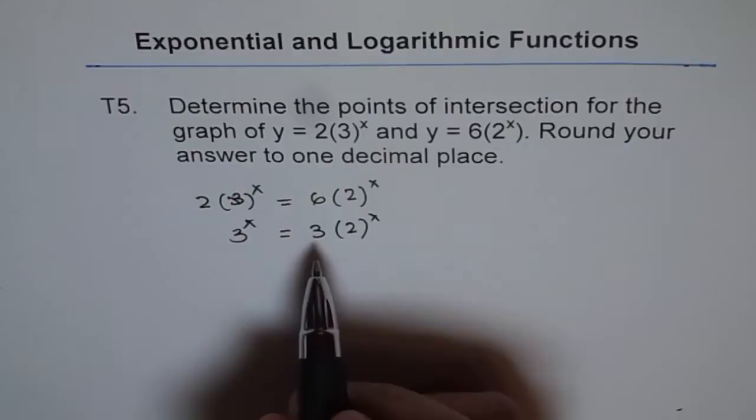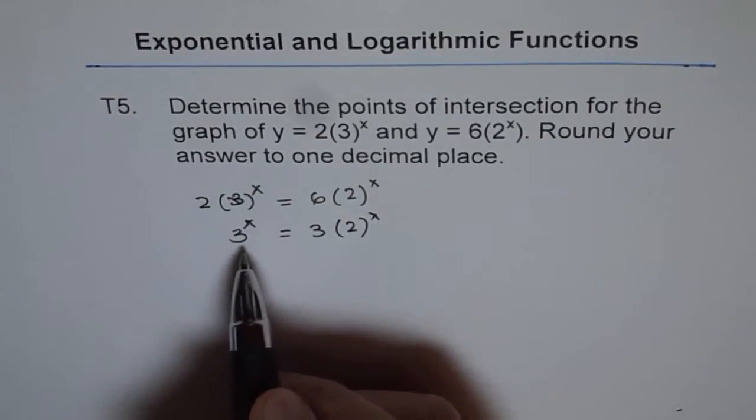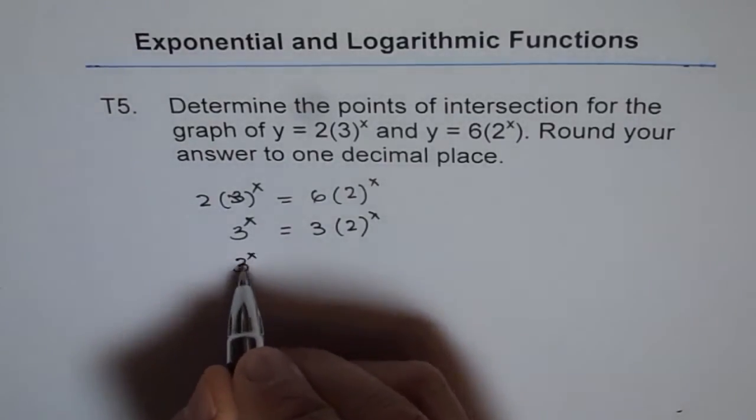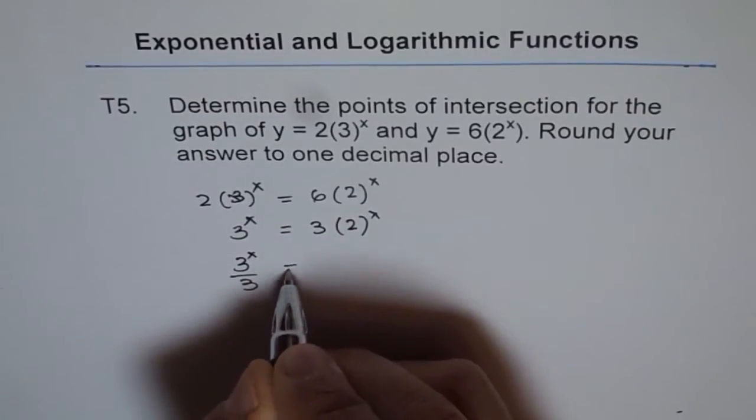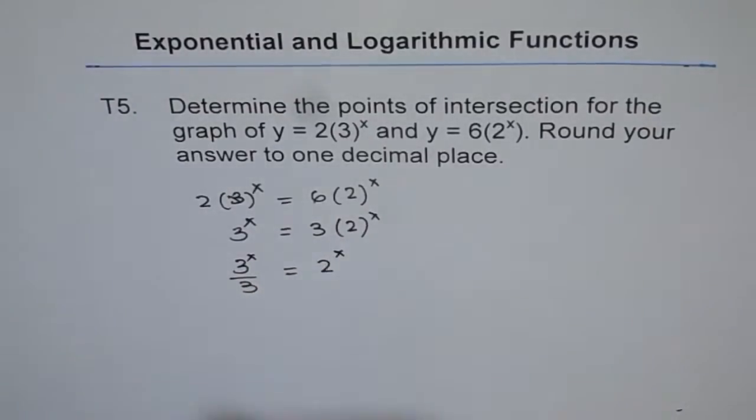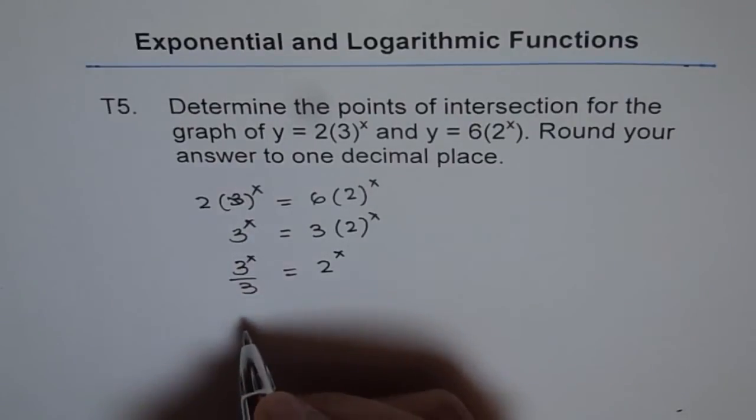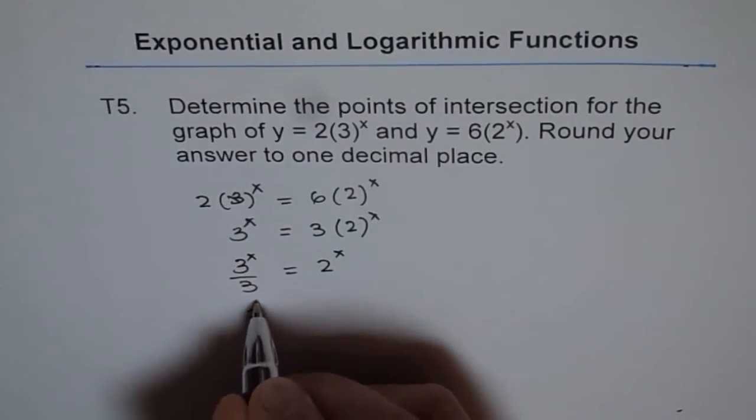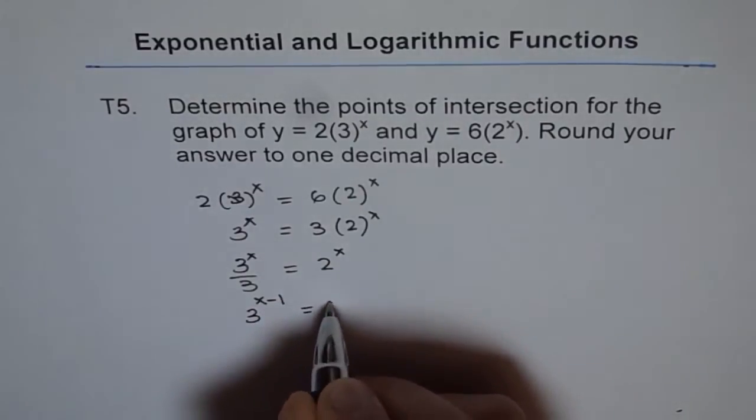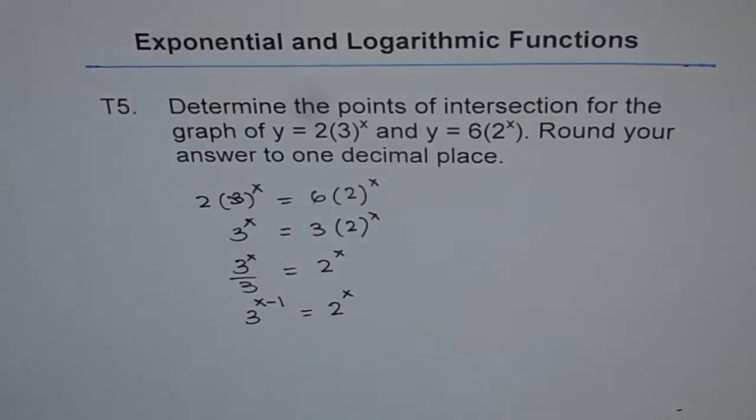Now this is a critical stage. Let's divide by 3. So what do you get? 3 to the power of x divided by 3 equals 2 to the power of x. Now this can be written as 3 to the power of x minus 1, which equals 2 to the power of x.